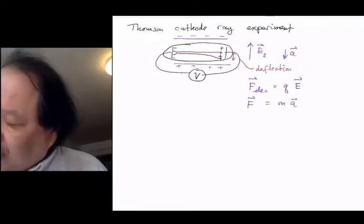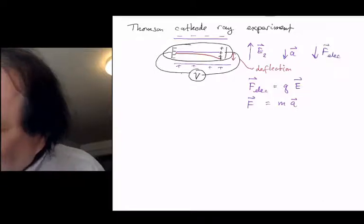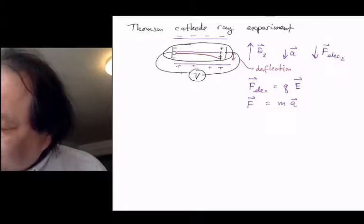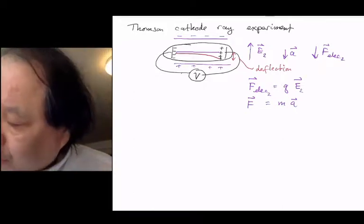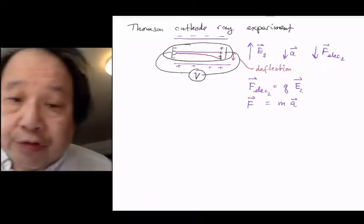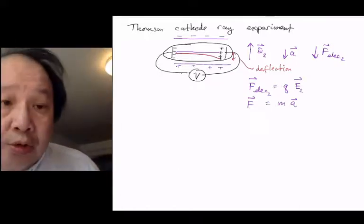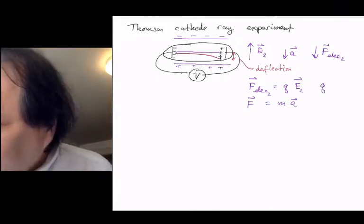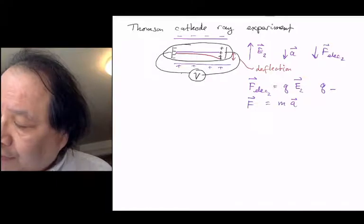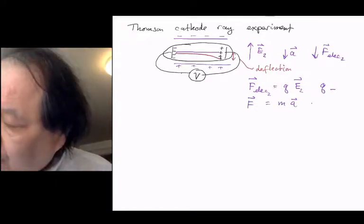So if a is pointing down, mass is positive, force is pointing down, then q, since the force electric is downwards and the electric field number 2 is upwards, they're in opposite directions, q has to be negatively charged. Q is negative, and he decided to call that the thing that was negative, the particle that was negative, the electron.